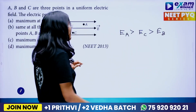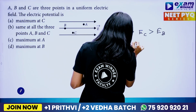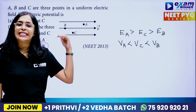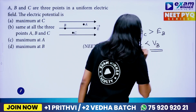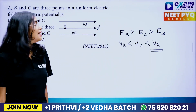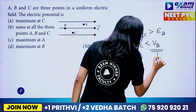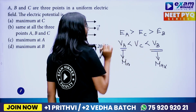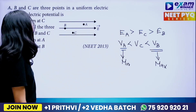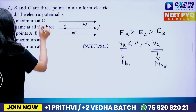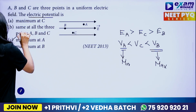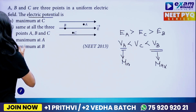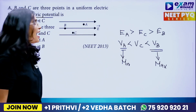The potential at A is less than potential at C, which is less than potential at B. So the maximum potential value is at point B, and the minimum potential value is at point A. Therefore, electric potential is maximum at B and minimum at A.